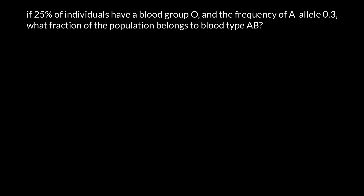Let me first remind you that three alleles — A, B, and O — make four blood groups. The first blood group is blood group A, second is blood group B, third is blood group AB, and the fourth is blood group O.